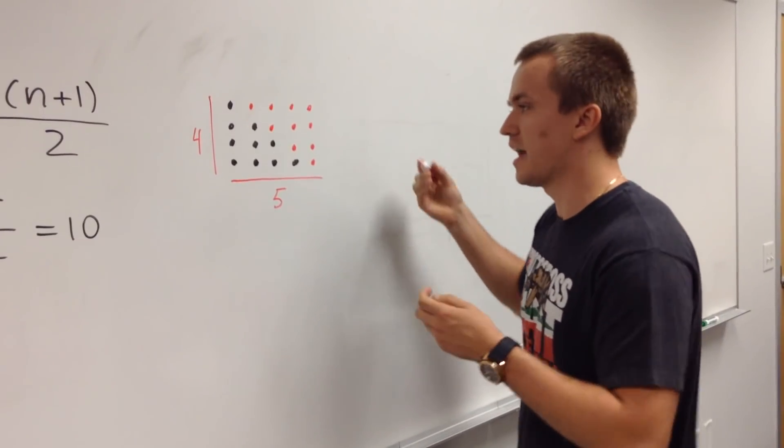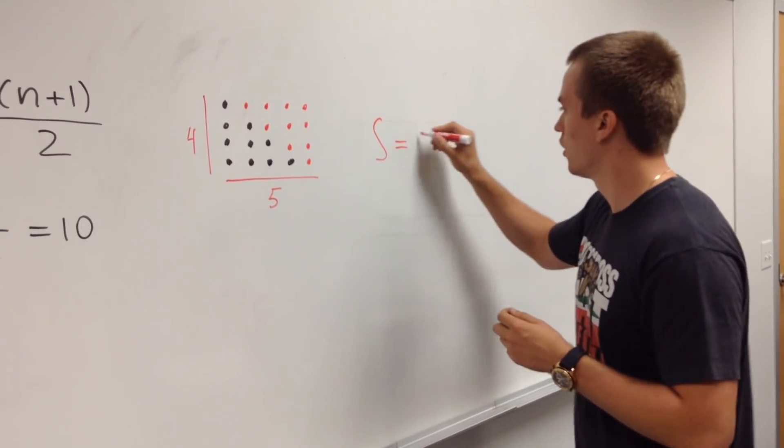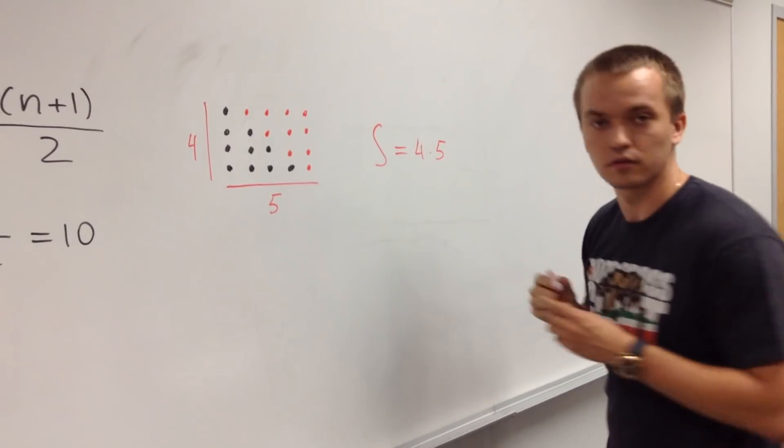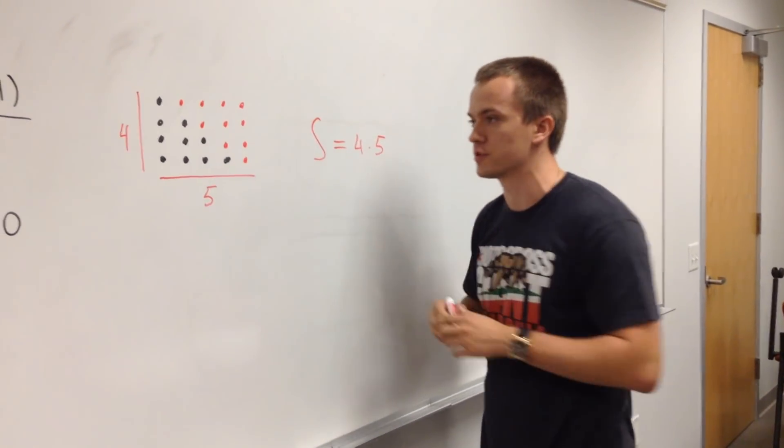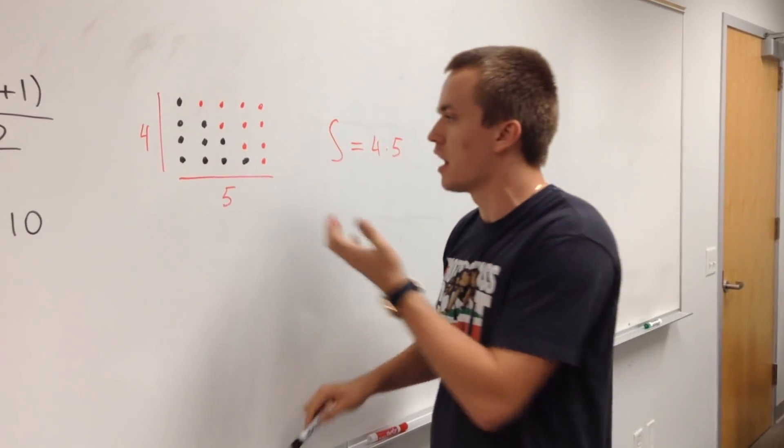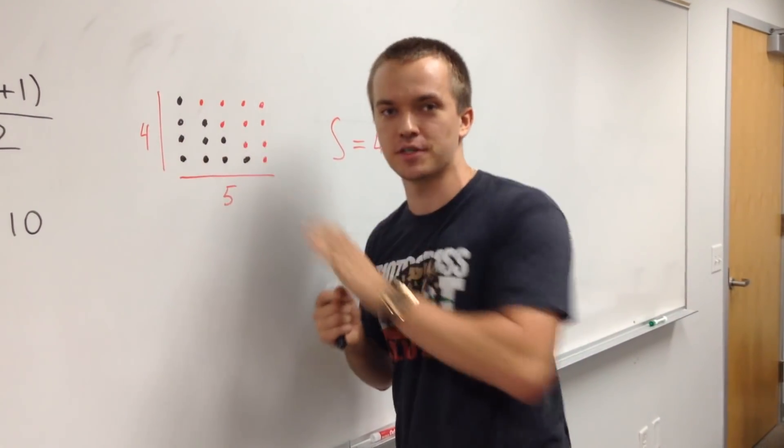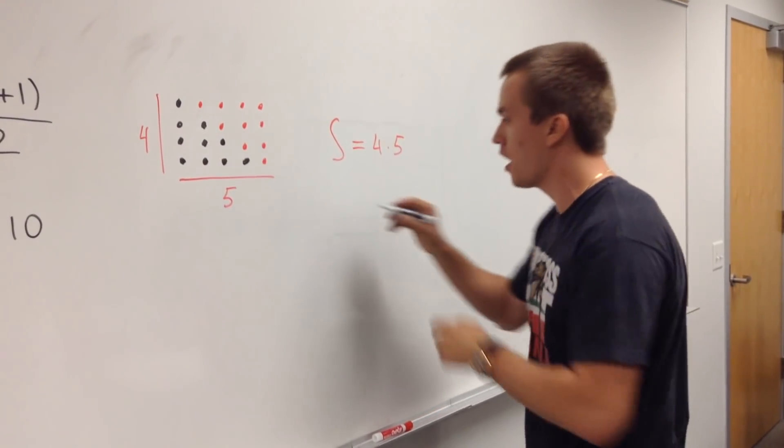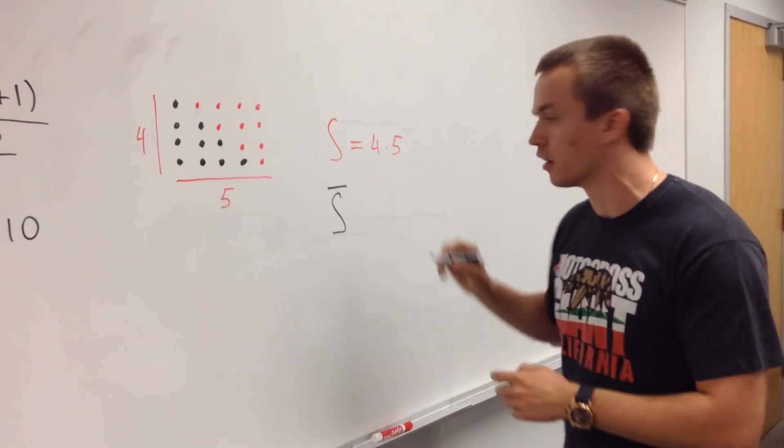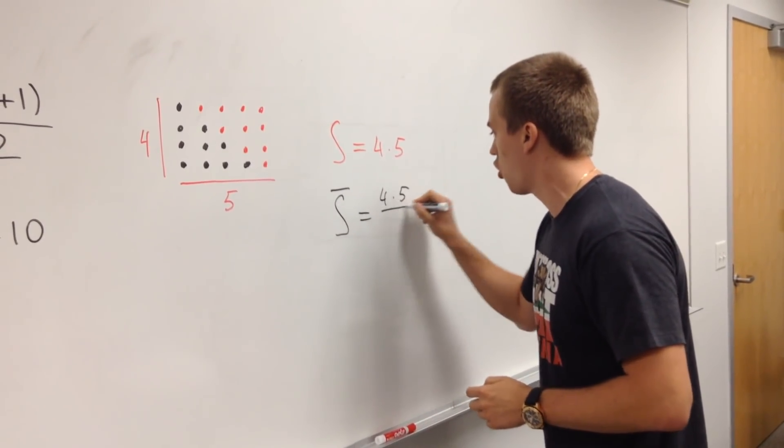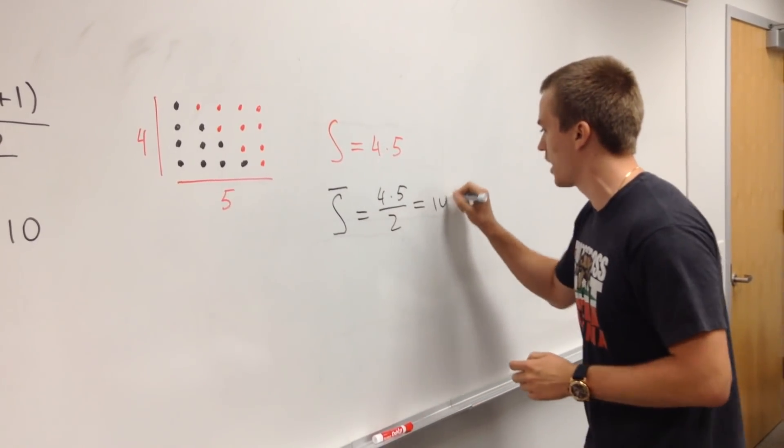So my sum is equal 4 times 5. So I have 4 times 5 points. But what I'm interested in, I'm interested to have just a half of these points. So instead of this sum, I will find some bar. So some bar is going to be equal 4 times 5 over 2 and it's equal to 10.